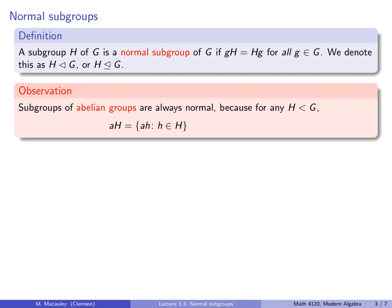So a quick observation. Subgroups of abelian groups are always normal. Because take any subgroup H and assume that G is abelian. Then the left coset is all elements that look like this, ah: h in H. And since a and h commute, that equals ha. And that set is the right coset Ha.